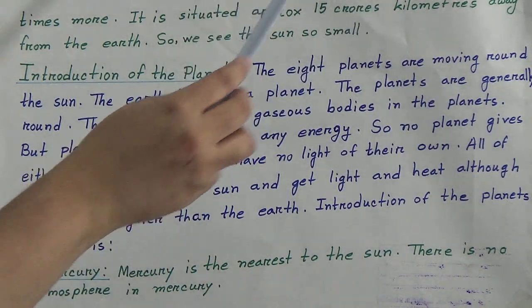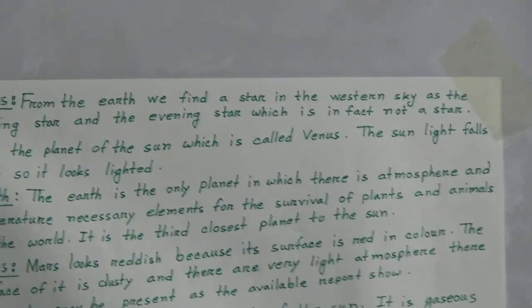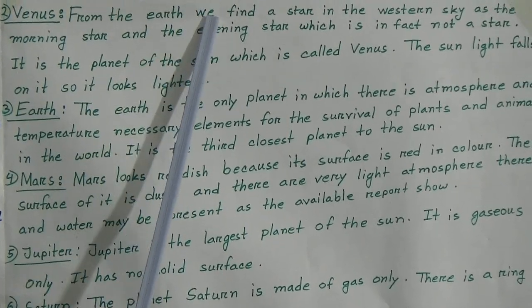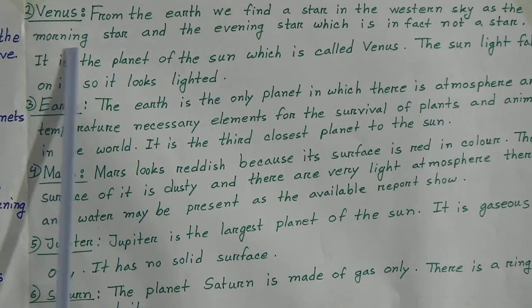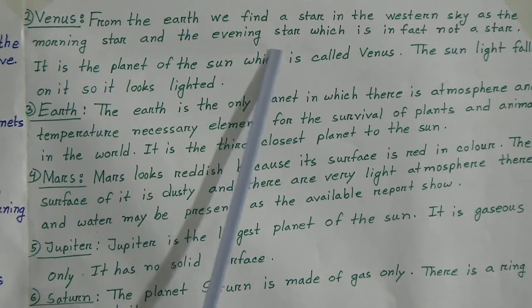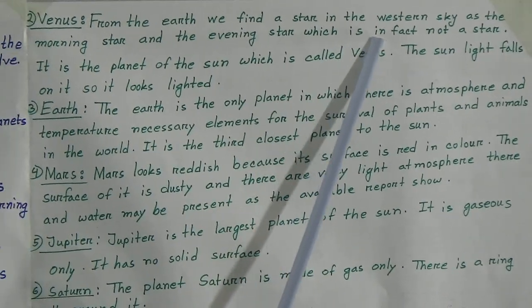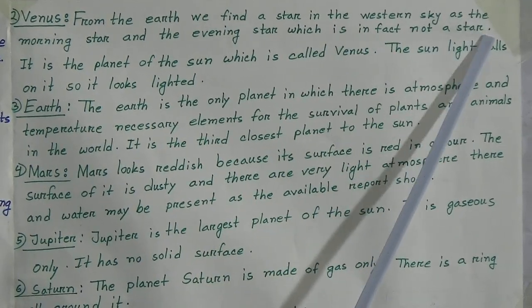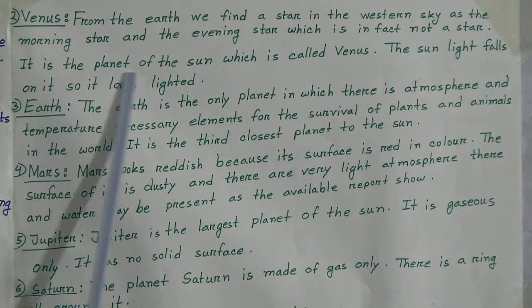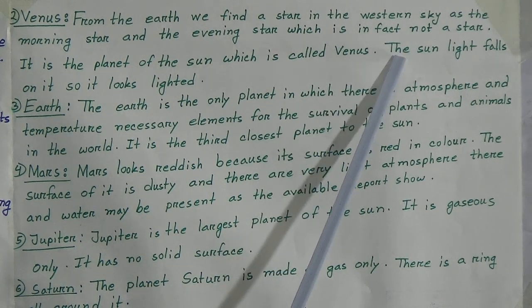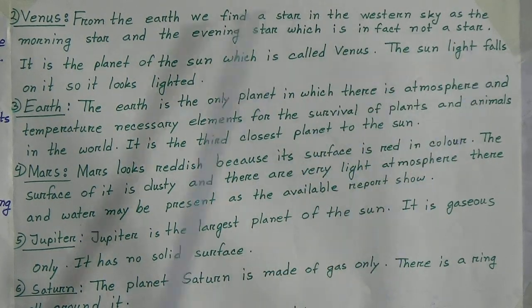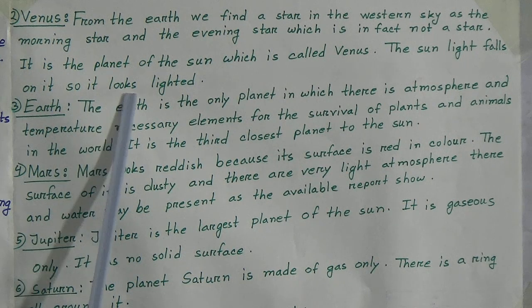Number 2: Venus. From the earth, we find a star in the western sky as the morning star and the evening star, which is in fact not a star. It is the planet Venus. The sunlight falls on it, so it looks lighted.